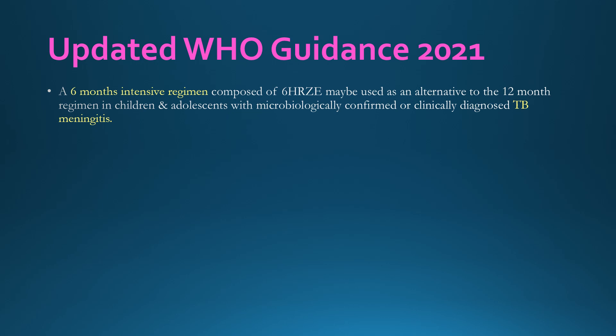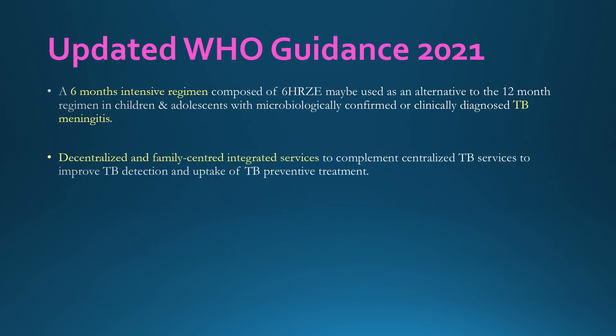A six-month intensive regimen of all four drugs (H, R, Z, E) may be used as an alternative 12-month regimen in children and adolescents with microbiologically confirmed or clinically diagnosed TB meningitis — note it is recommended as 'may be used,' not mandatory. Decentralized family-centered integrated services should complement centralized TB services to improve detection and uptake of TB preventive treatment.